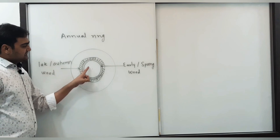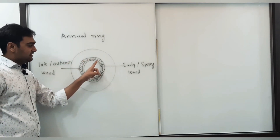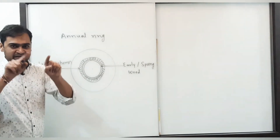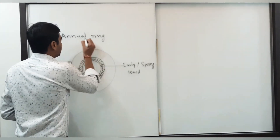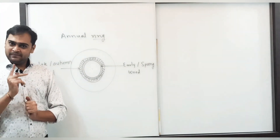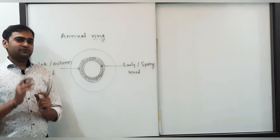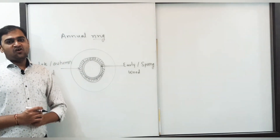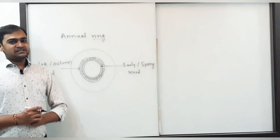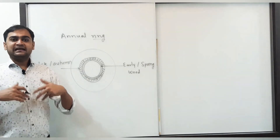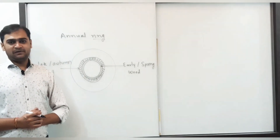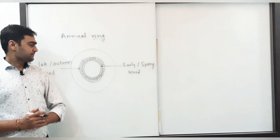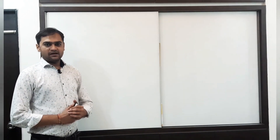One annual ring contains two parts: the early spring wood (lighter, at the center) and the late autumn wood (darker, at the periphery). The annual ring can help measure the age of plants — the number of rings is directly proportional to the years of the plant's age. This is not a perfect measurement, but one can calculate the approximate age. These growth rings have some drawbacks which will be discussed later.